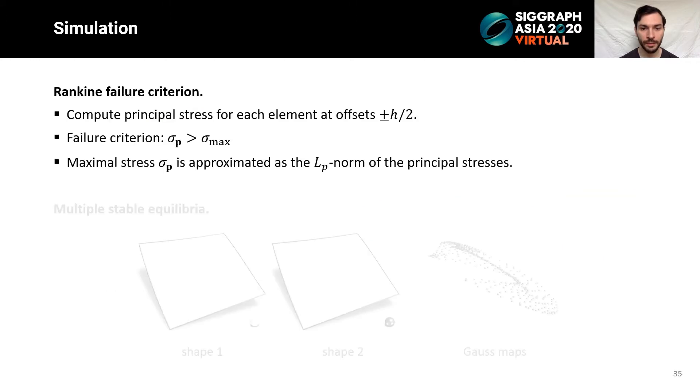To evaluate the fabricability of a panel, we follow Rankine's theory, assuming that the failure occurs when the maximal principal stress exceeds the threshold for glass. Instead of taking the global maximal value, we follow a common approach of taking an L_p norm across the triangles choosing a high value of p. This approximation is smooth with respect to the panel boundary and facilitates continuous optimization. In practice, we set p equal 12.